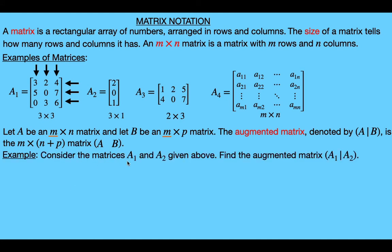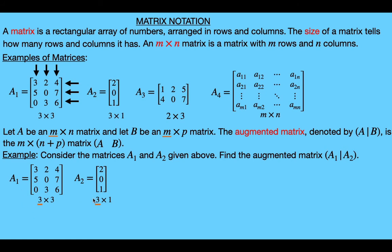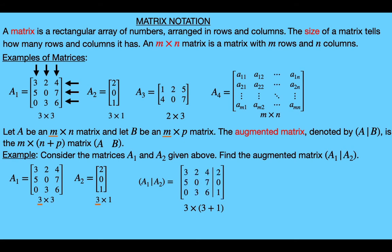Let's look at an example using matrices A1 and A2 from above to find the augmented matrix. A1 is a 3×3 matrix and A2 is a 3×1 matrix. Notice both have 3 rows, so the condition is satisfied. The augmented matrix will have 3 rows, and the number of columns will be 3 plus 1, giving us a 3×4 matrix where the first 3 columns are from A1 and the 4th column is from A2.